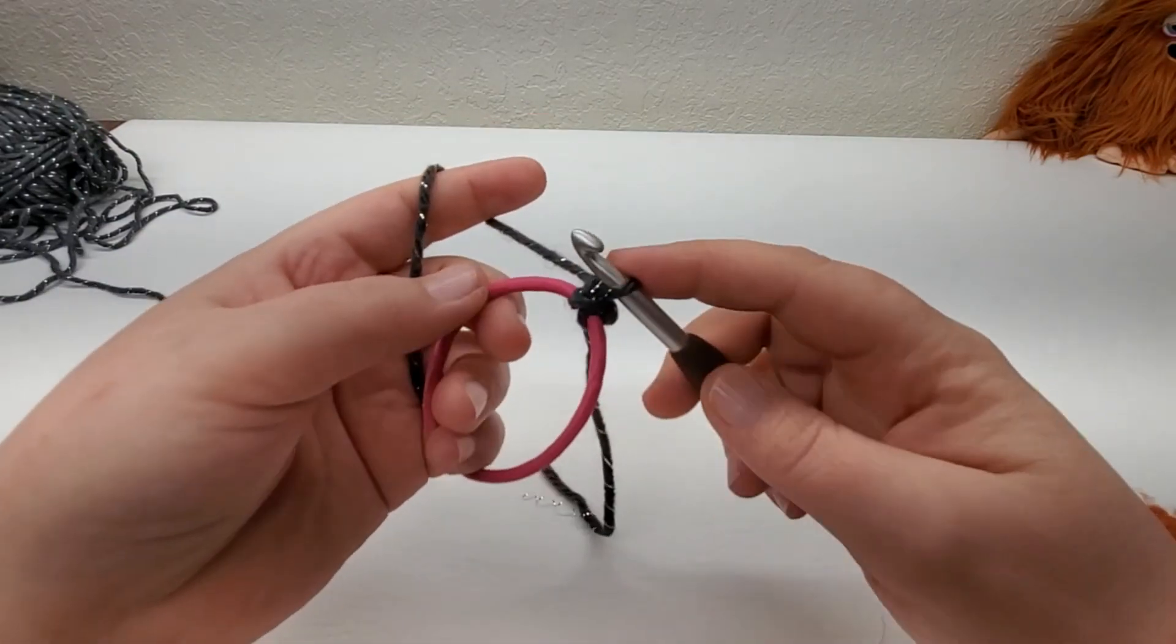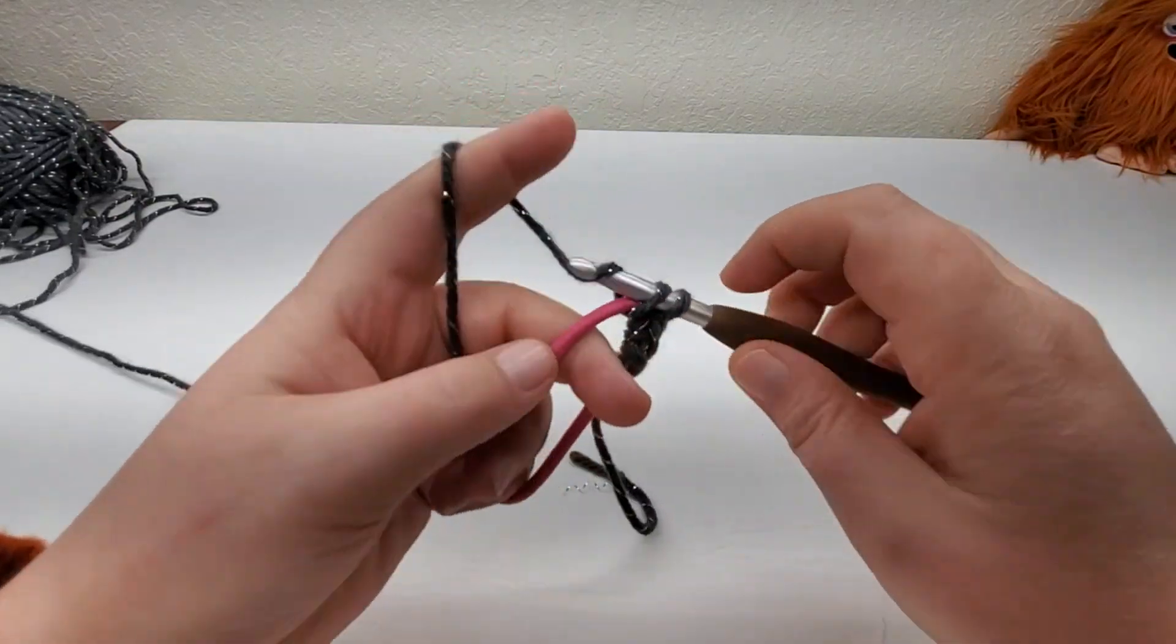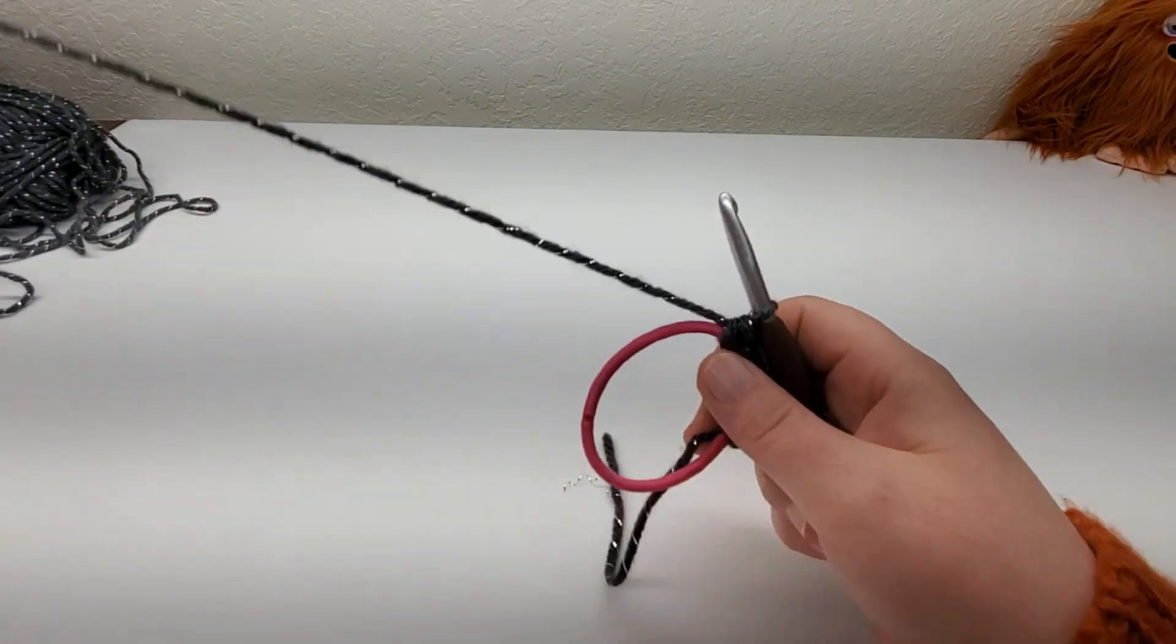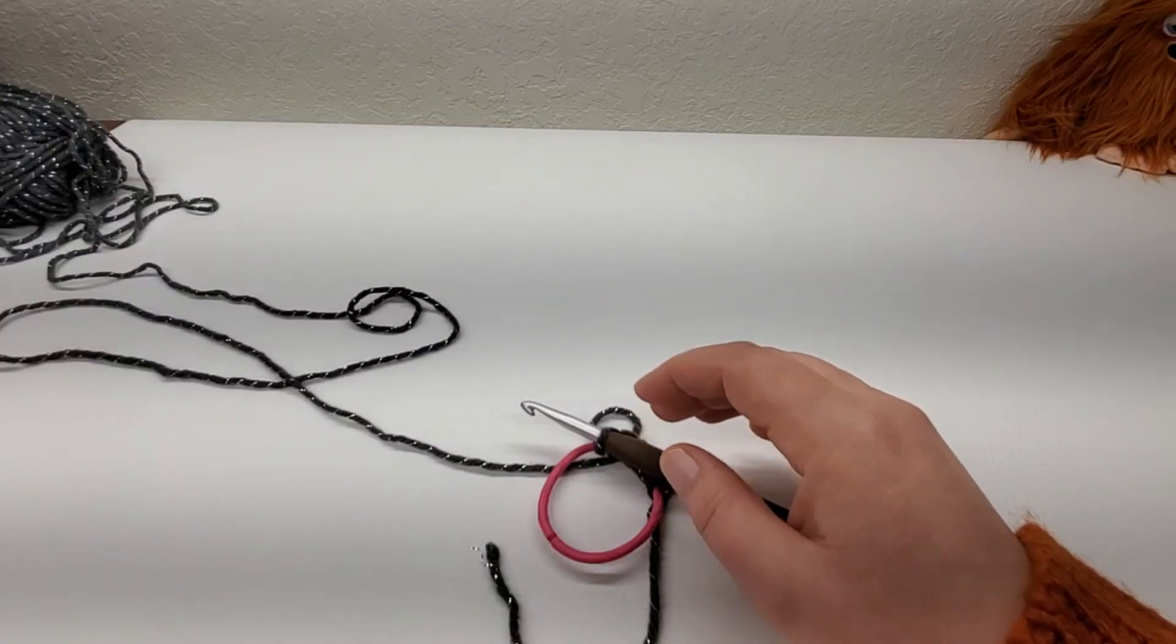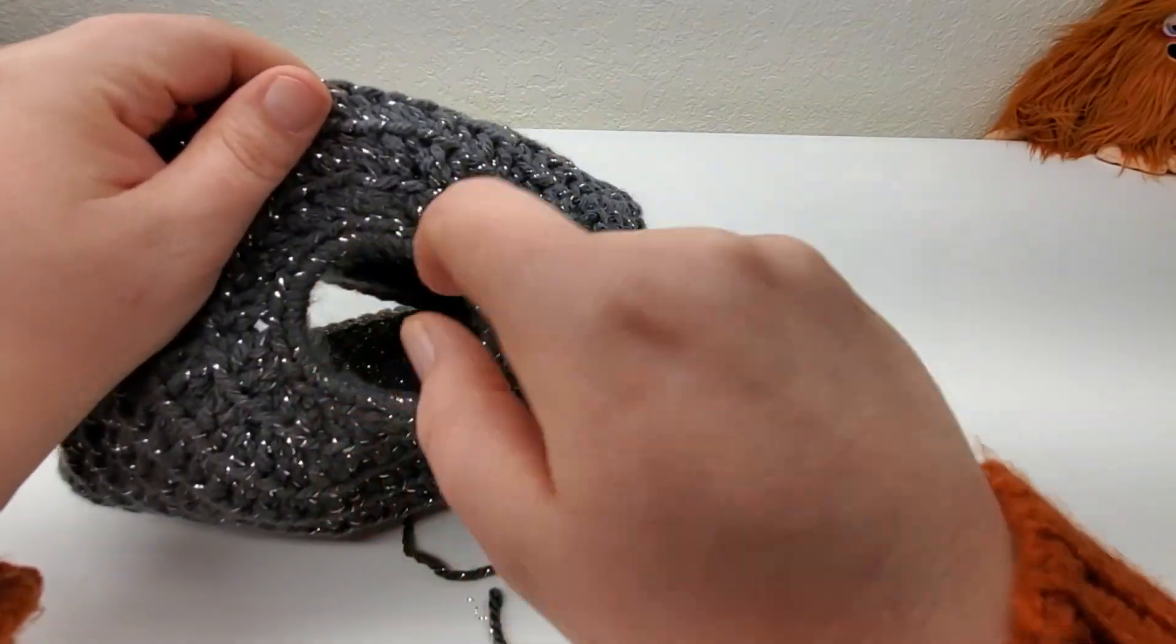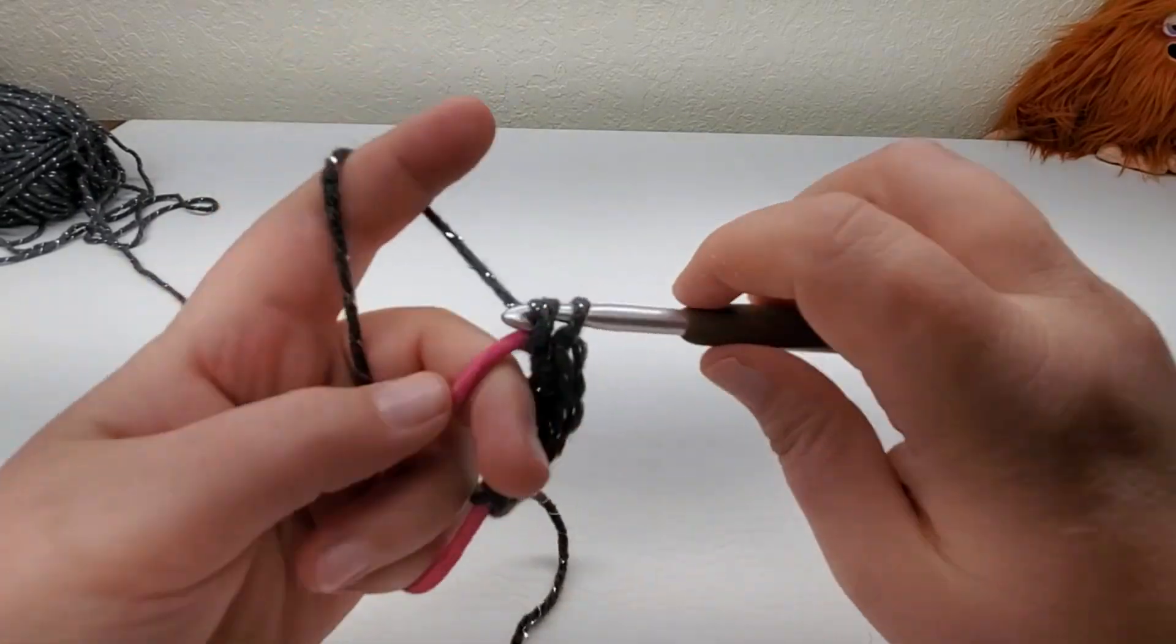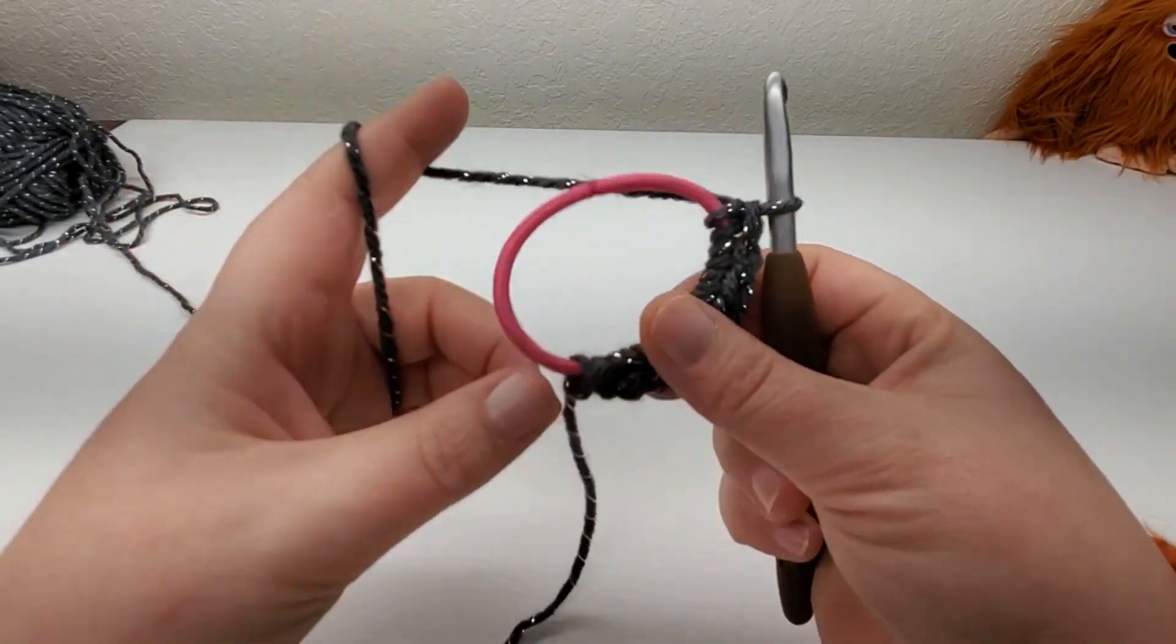So now I want you guys to work 28 single crochets around the hair tie. If you use a worn out hair tie, the top of the hat is going to be real big, and we don't want that. You want a perfect, nice, newer hair tie. But go ahead and work your 28 single crochet around your hair tie, and I'll meet you guys back around.